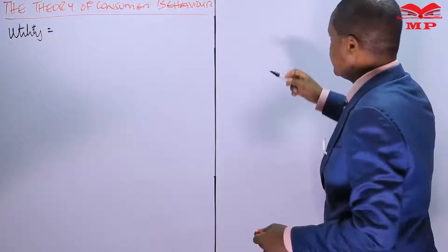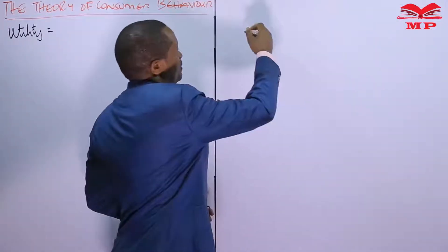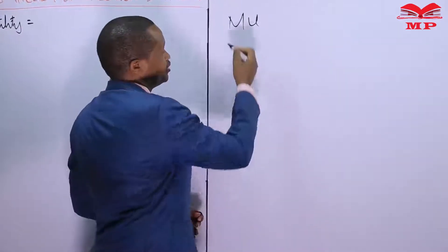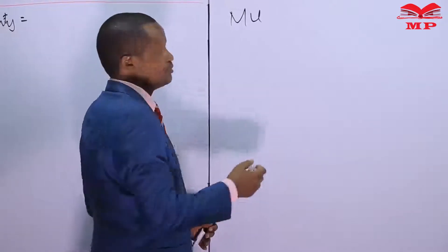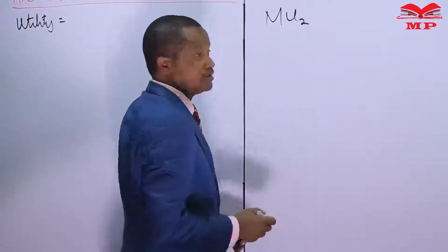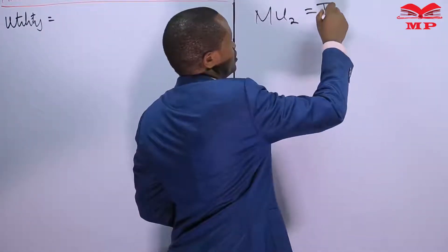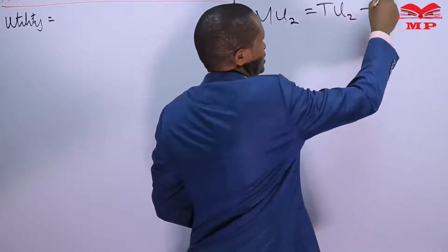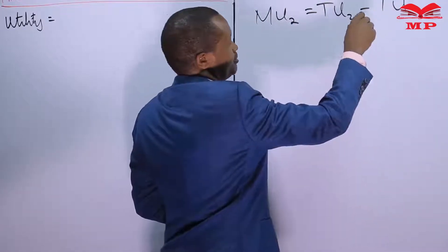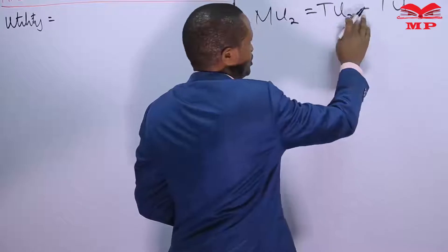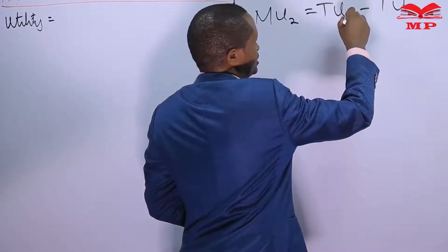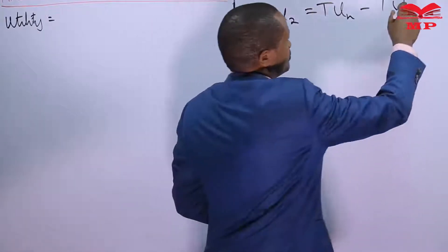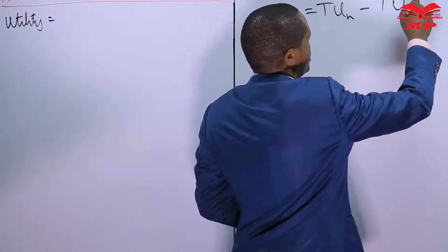The mathematical relationship between marginal utility and total utility: the marginal utility after consuming a certain unit — for example, the second unit — is equal to the total utility of the second unit minus the total utility of the preceding unit. This is written as MU(n) = TU(n) minus TU(n-1).